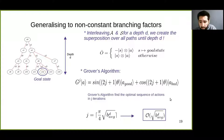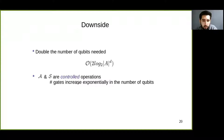There are downsides, of course. The first downside is that we need to double the number of qubits compared to the first quantum approach. The second is that the quantum operators A and S are controlled operations, which means the number of gates will increase exponentially in the number of qubits, and this could lead to poor performance, at least in the current state-of-the-art of quantum hardware.